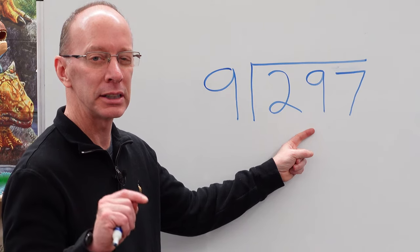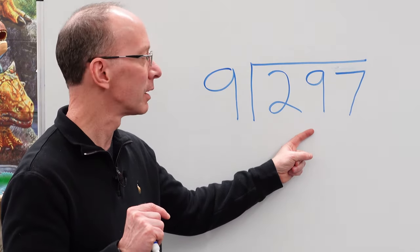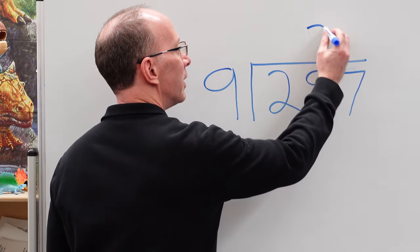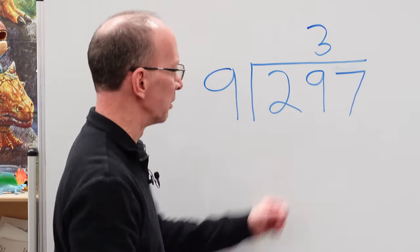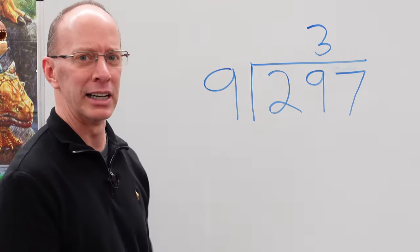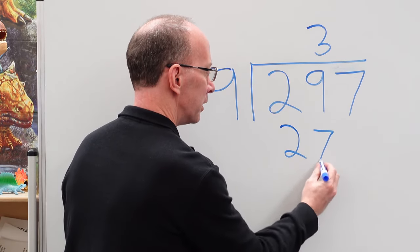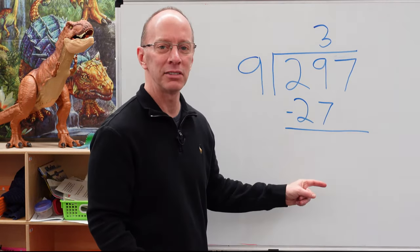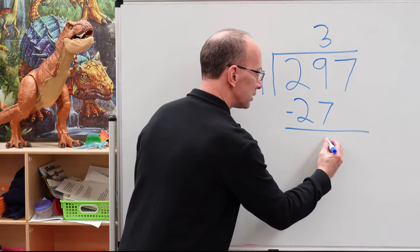Well, let me see here. Nine times two is 18. Nine times three is 27. I'm going to stick with nine times three. So we're going to put three right here. I have no idea why I was talking with a cowboy voice. Let's do three times nine is 27. We'll put 27 right there. A little subtraction. Nine minus seven, what is it? Nine minus seven is two. Two minus two, zero.